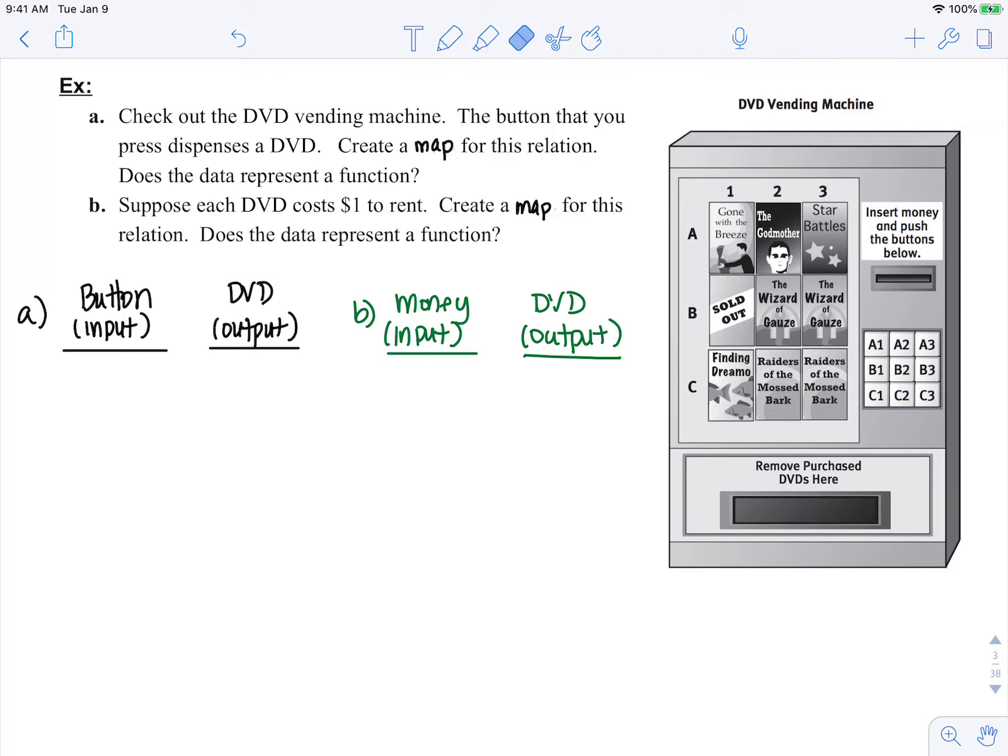Check out the DVD vending machine. The button that you press dispenses a DVD. Create a map for this relation. Does the data represent a function? So your input here is what button you press and the output is your possible DVD.